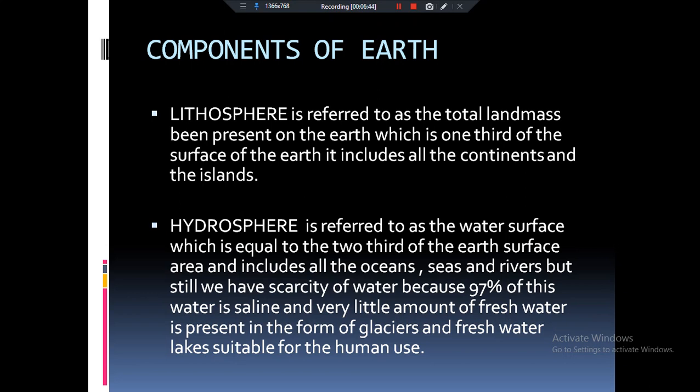Now coming to the components of the earth lithosphere, hydrosphere and the atmosphere. It is very clear from the names. Lithosphere is basically the land surface of the earth. Where there is land, continents, mountains, plateaus, they are forming the lithosphere. And it is forming about one third of the total surface area of the earth.